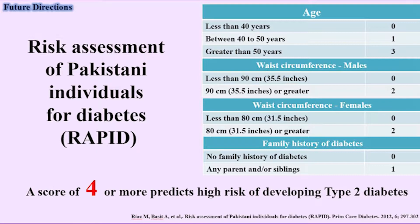With family history, mark one; without family history, mark zero. So if your score is coming four, then we need to go and check — we may be IGT. This is a very simple way of finding out whether I am a borderline diabetic, a pre-diabetic or not. This has been a very validated score for the last 10 years. This is a published score.